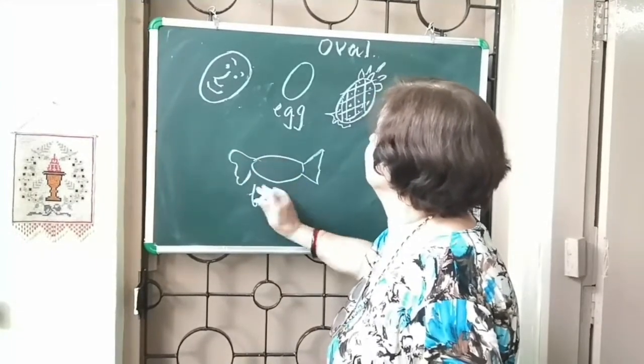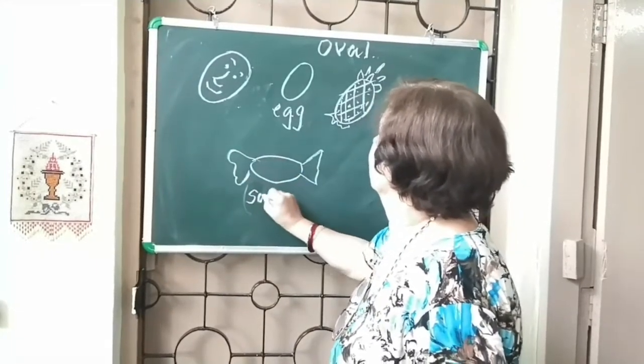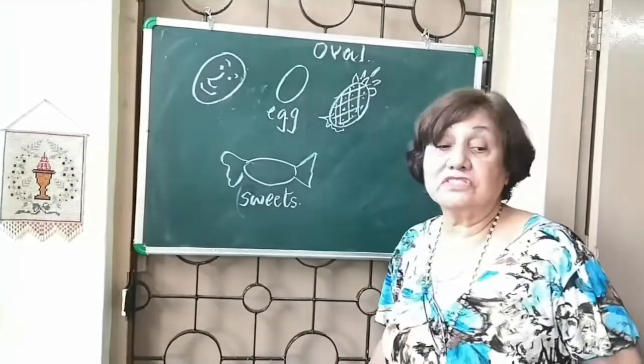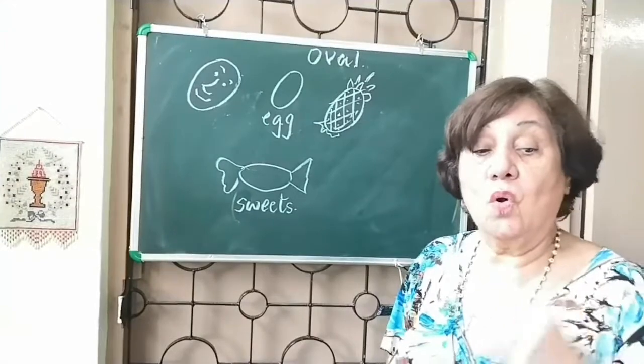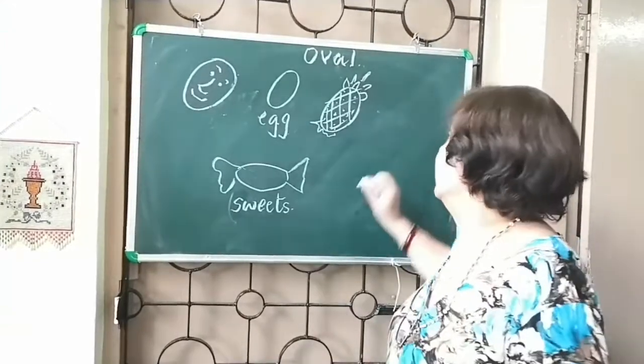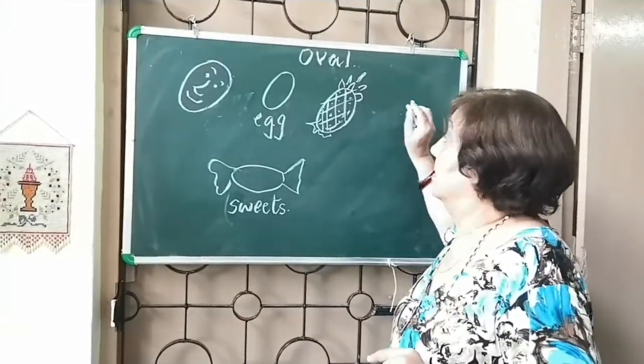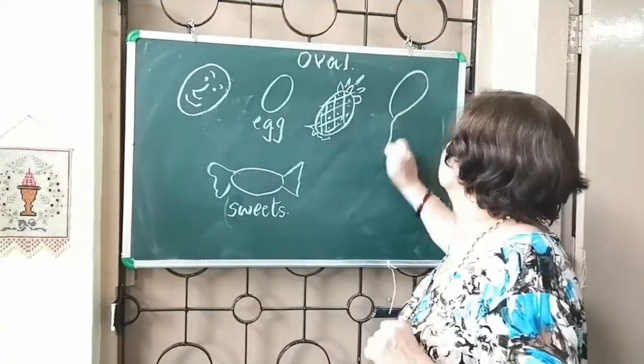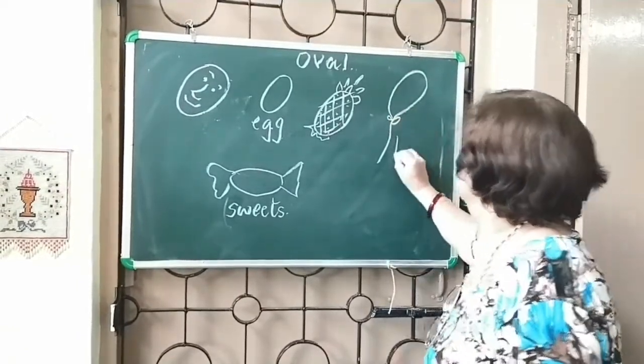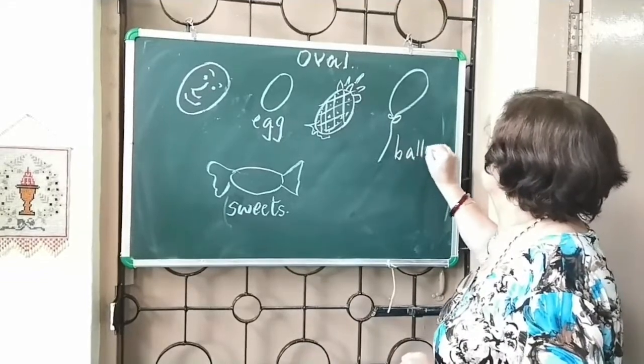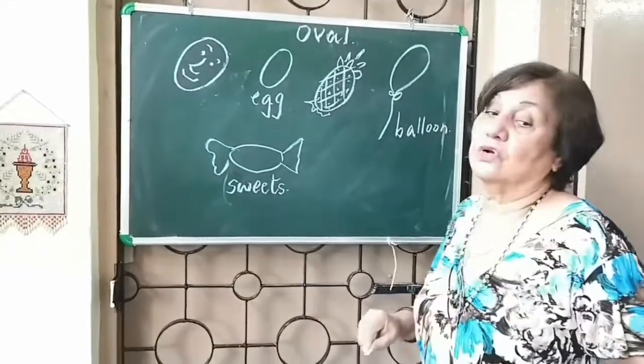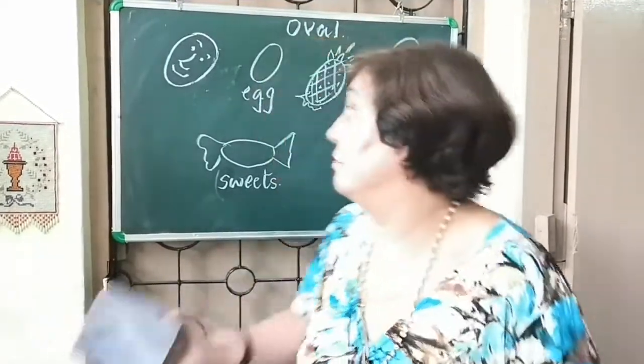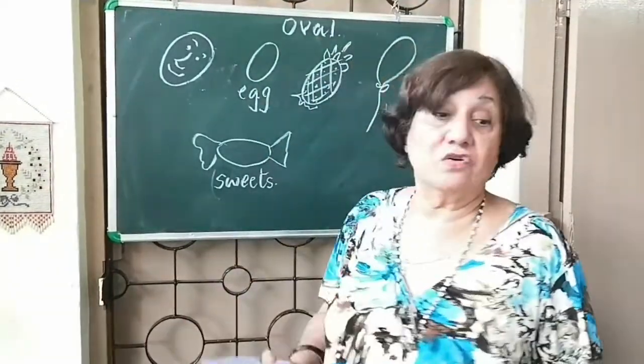Some toffees, some sweets are also in the shape of an oval. There is one more thing that mummy blows on your birthday. Balloons. A balloon is also oval in shape.